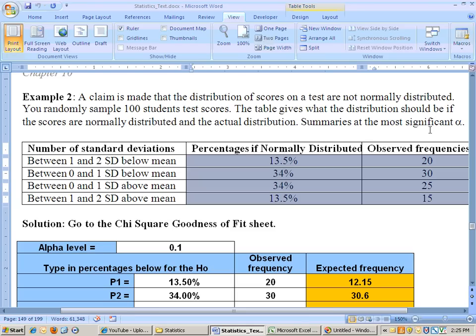If the distribution of scores are normally distributed, this is the percentage of scores that should fall between 1 and 2 standard deviations below the mean, between 0 and 1 standard deviation below the mean, 0 and 1 standard deviation above the mean, and 1 to 2 standard deviations above the mean. So this is the way the distribution should be if it's normally distributed.